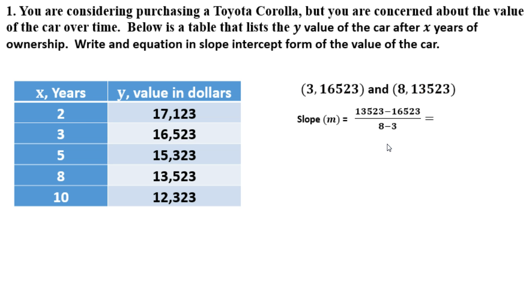Now I'm just going to simplify that. It gives me negative 3,000 divided by 5, which hopefully you could quickly identify as negative 600. So my slope is negative 600.